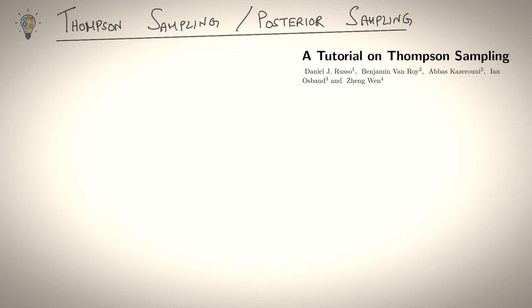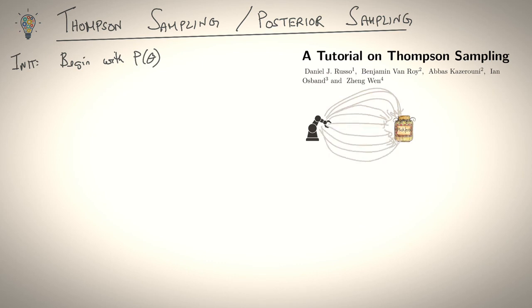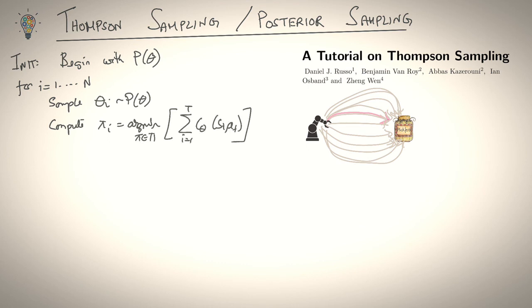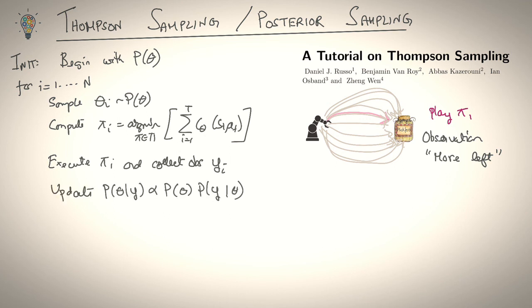Okay, so the way the algorithm goes is you begin as usual by initializing with the prior distribution P(theta). So let's look at the cost function learning example where a robot arm is trying to figure out the optimal cost function to go grab a jar of pickles. So it's uncertain about these various cost functions. And the algorithm proceeds iteratively where each iteration, we sample a theta from our current P(theta). We sample a cost function. We then compute an optimal policy that minimizes this cost function. And this optimum policy is then executed. At this point, we would receive an observation from the human that might say more to the left.